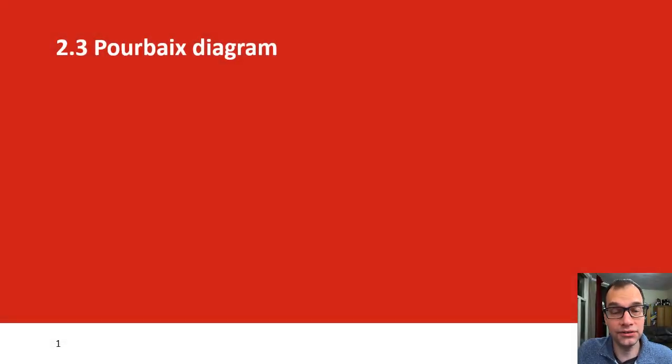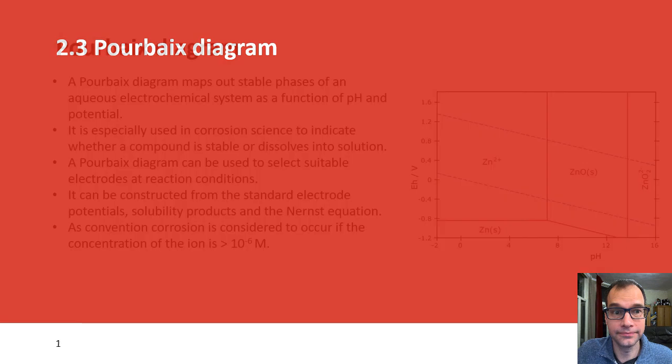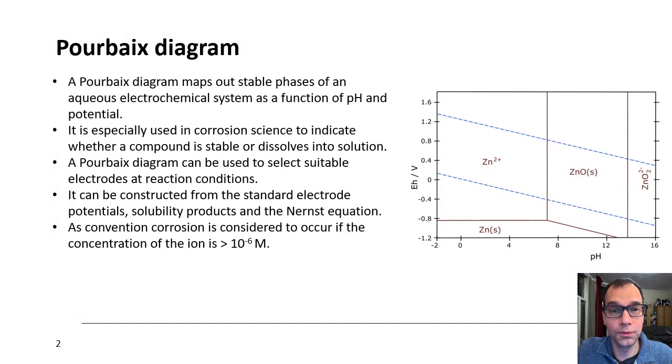Welcome to this third and final screencast on electrochemical thermodynamics. In this screencast, we will discuss the Pourbaix diagram. Now, what is a Pourbaix diagram? Well, here on the right you see one, namely for zinc. What you see on the x-axis is the pH, and on the y-axis is the potential versus the standard hydrogen electrode.